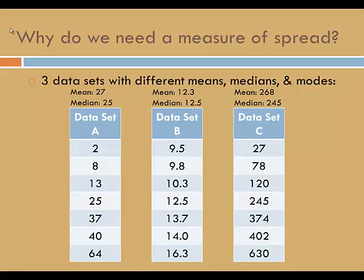Why do we need a measure of spread? Take a look at the three data sets on your screen. Each has a different mean, median, and mode. Using the measures of center alone, we can tell that the data sets are not identical. You might start to think that if the measures of center were equal across the board, that the data sets must be the same.